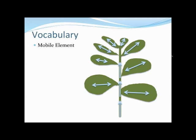Notice the two directional arrows on the leaves representing mobile elements. When we talk about an immobile element, once those elements get distributed to the leaves, they're stuck there. The plant cannot reallocate those to different parts of the plant as needed.